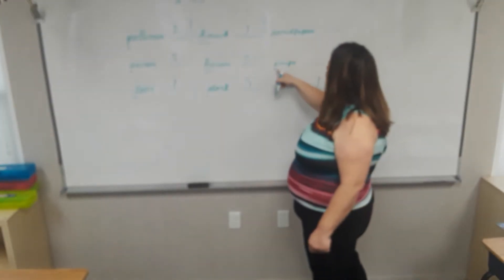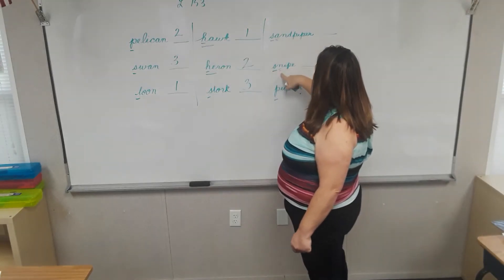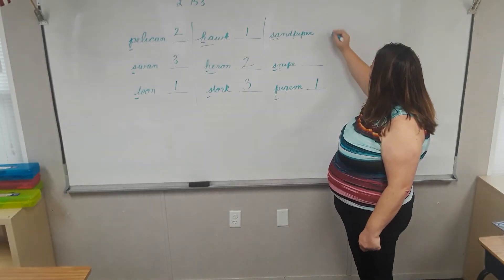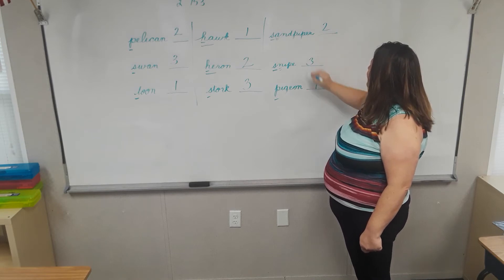And now we have two S's. So now we have to look at the second letter. And we have an A or an N. Which comes first? A or N? A comes first. So Pigeon is first. Sandpiper is second. And Snipe is third.